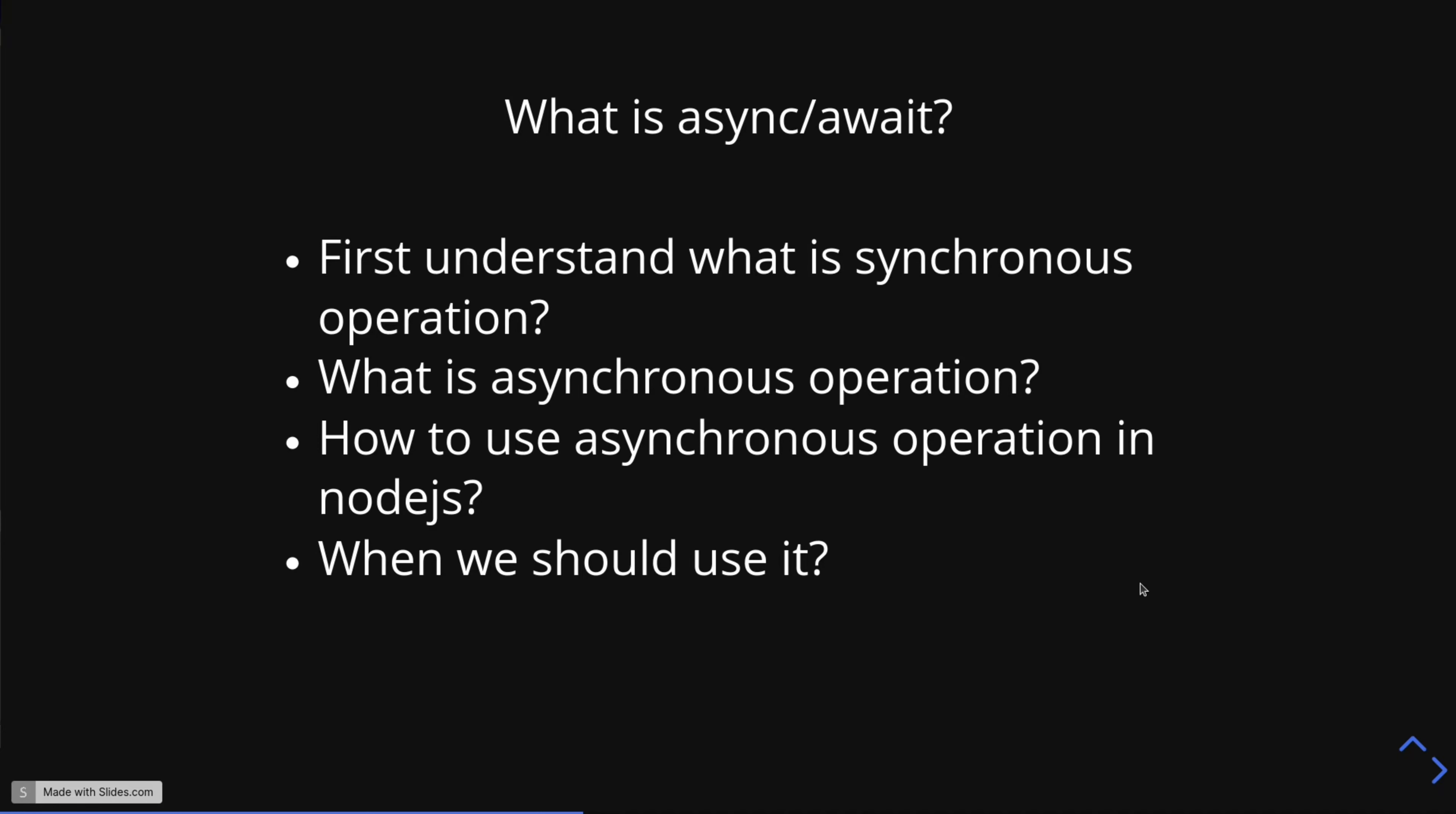Next we will see what is asynchronous operation. Asynchronous operation means if you want to perform two tasks, only when the first task is completed, then the second task is executed. The program will execute the first task, then only the next task will perform.